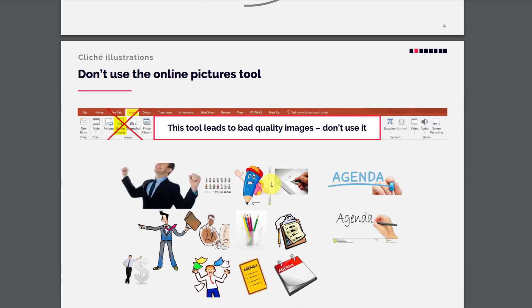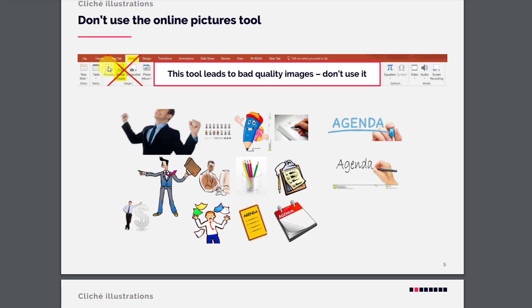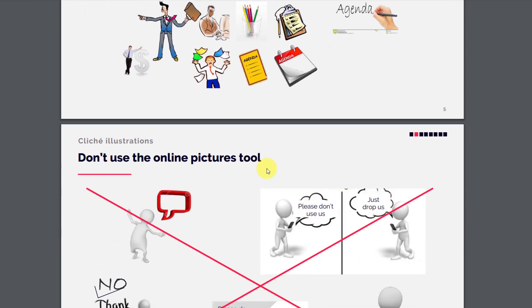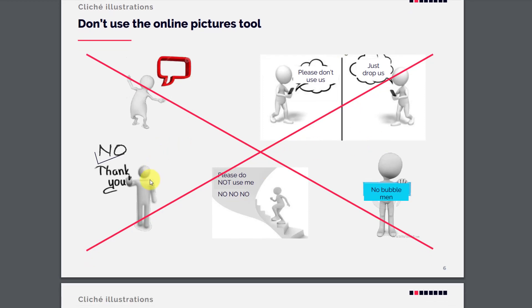Don't use the online pictures tool in PowerPoint — this tool brings bad quality images, so we are not going to use any of those images. Also, don't use pictures like 'bubble men,' which are very common in many presentations. Please do not use them in your presentation on the Nomore platform.